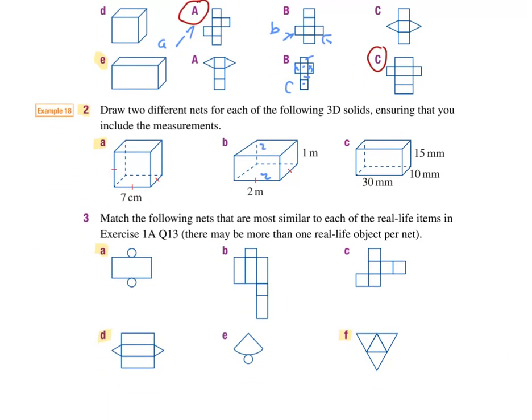And the last couple of questions, match them to the actual real life shapes. Two flat circles with a wraparound part in the middle, that has to be a cylinder. So I'll write the word cylinder.